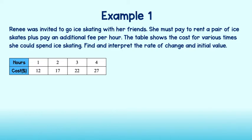Renee was invited to go ice skating with her friends. She must pay to rent a pair of ice skates plus pay an additional fee per hour. The table shows the cost for various times she could spend ice skating. Find and interpret the rate of change and initial value. To start, it might be beneficial to note that any table with two quantities can be turned into a graph. We will let x represent hours and y represent cost. This would make each pair of numbers an ordered pair on the graph, so we can approach this problem as if we have a graph in front of us.